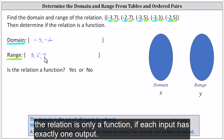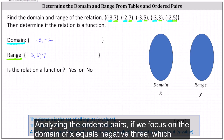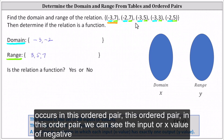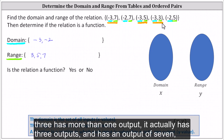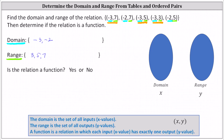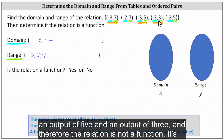The relation is only a function if each input has exactly one output. While analyzing the ordered pairs, if we focus on the domain value x equals negative three, which occurs in this ordered pair, this ordered pair, and this ordered pair, we can see the input of negative three has more than one output — it actually has three outputs: seven, five, and three. And therefore, the relation is not a function.